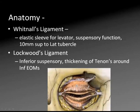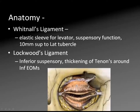Whitnall's ligament is a condensation of connective tissue around the levator, which has a suspensory function for all these tissues. It turns the pull of the levator from anterior-posterior to inferior-superior. It's about 10 millimeters superior to the lateral tubercle, and it actually inserts partially into the lacrimal gland.